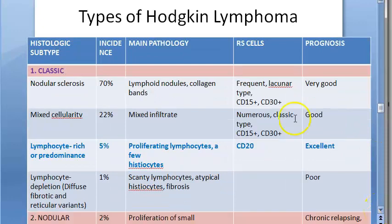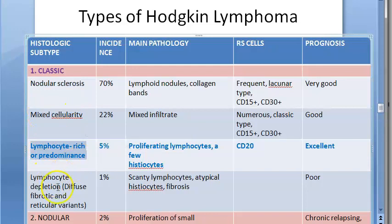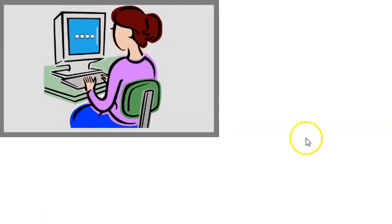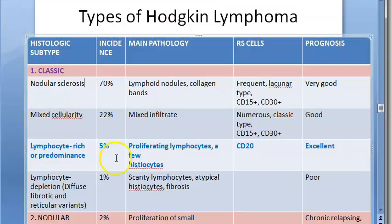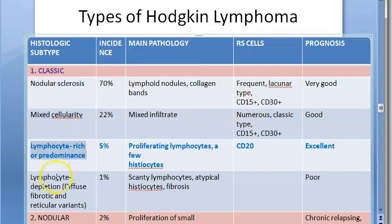There are four classic types of Hodgkin lymphoma: nodular sclerosis, mixed cellularity, lymphocyte rich, and lymphocyte depletion. Nodular sclerosis is the most common type, followed by mixed cellularity, then lymphocyte rich, and then lymphocyte depleted.